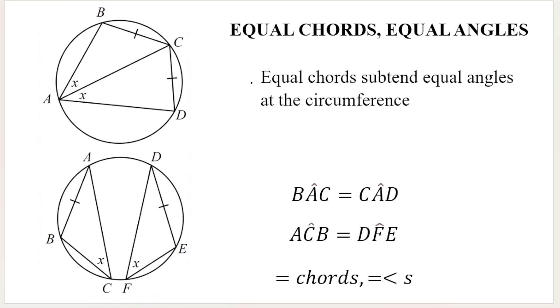The formal way of explaining this is equal chords subtend equal angles at the circumference. So for example, B, A, C, which is this angle over here, is equal to C, A, D. Your reason would be equal chords, equal angles.